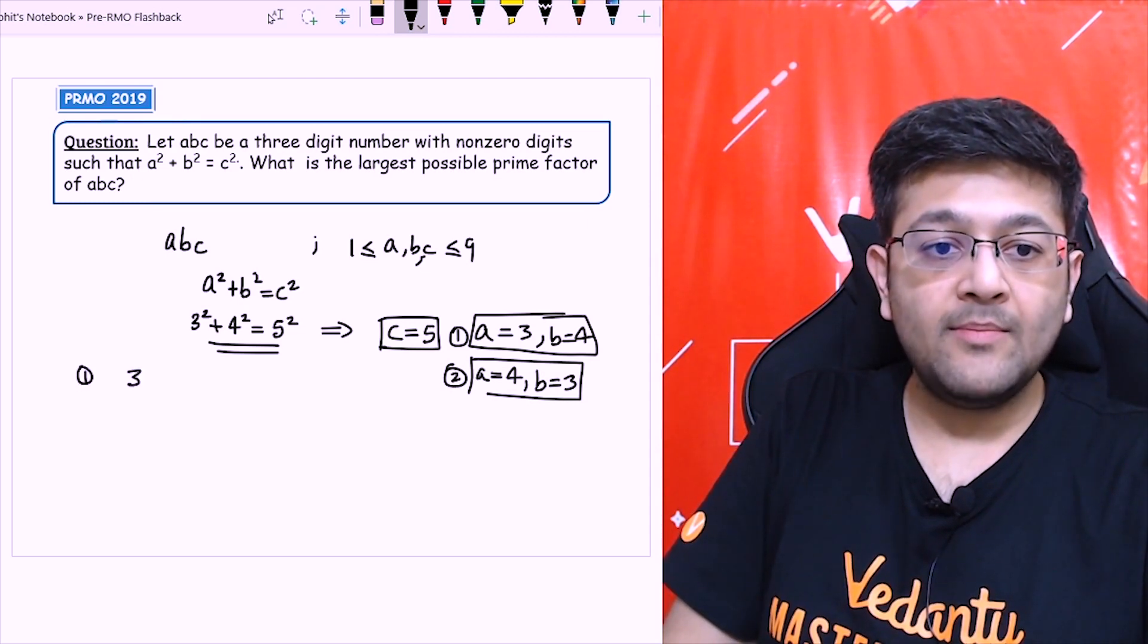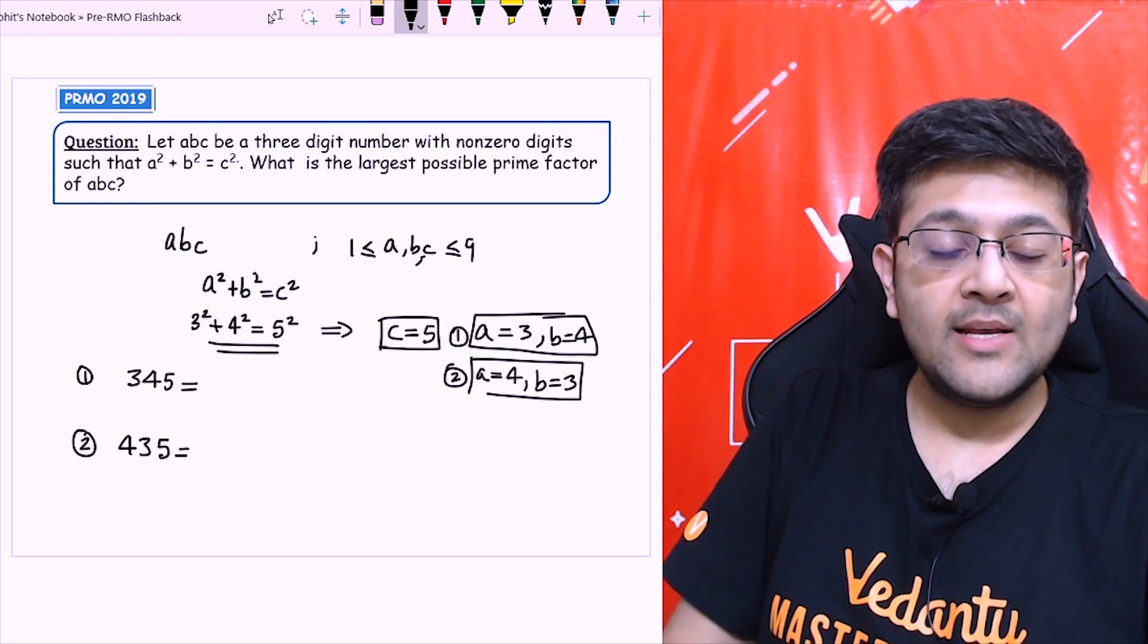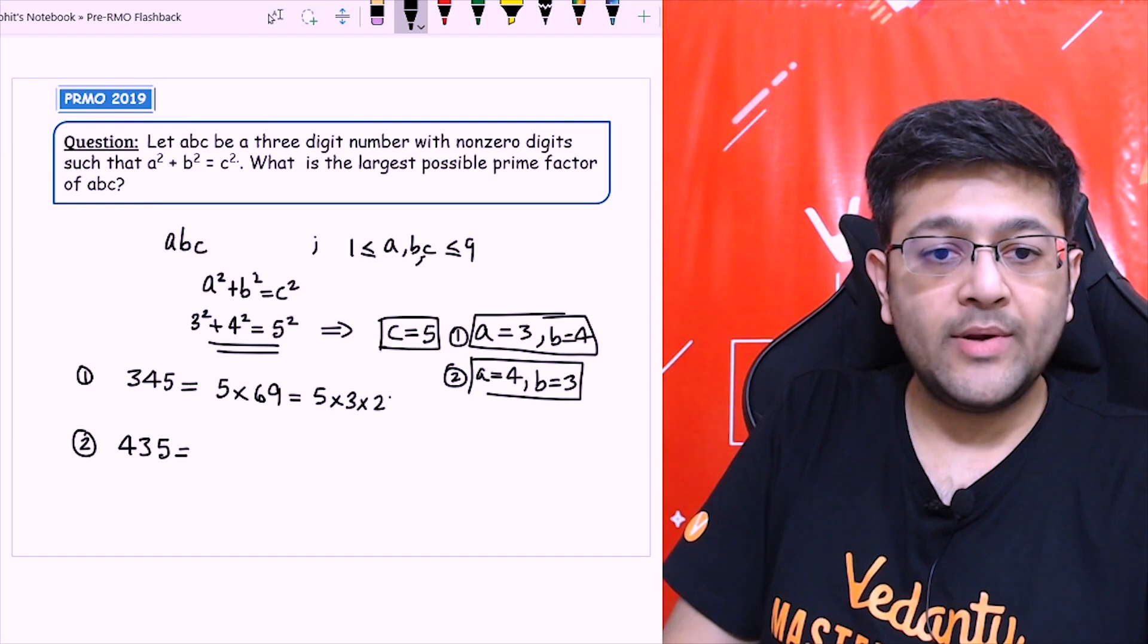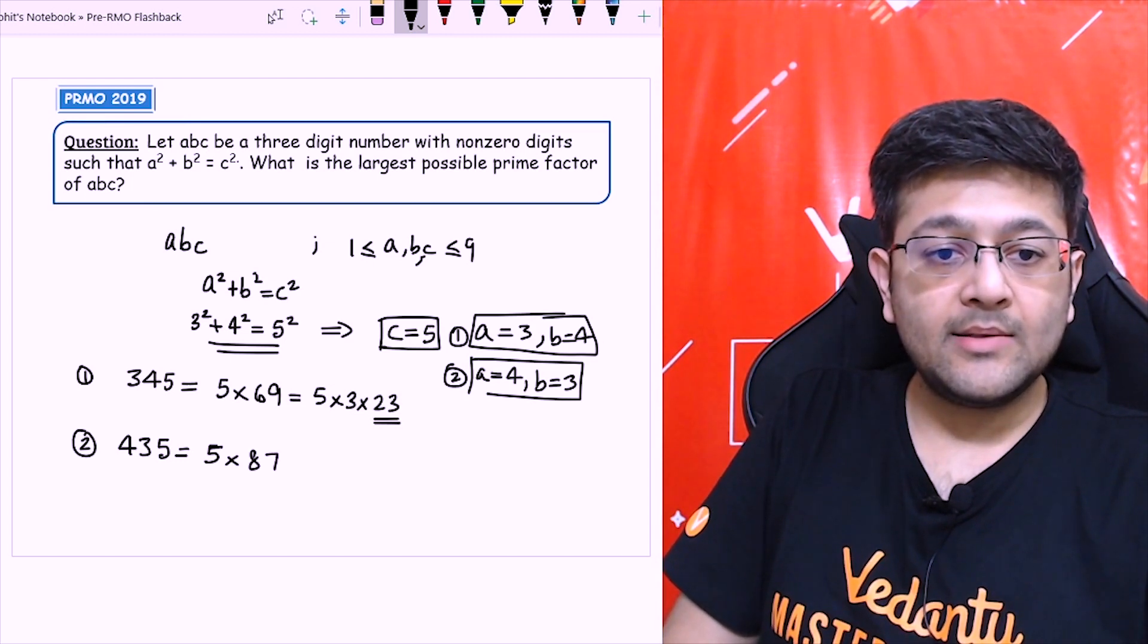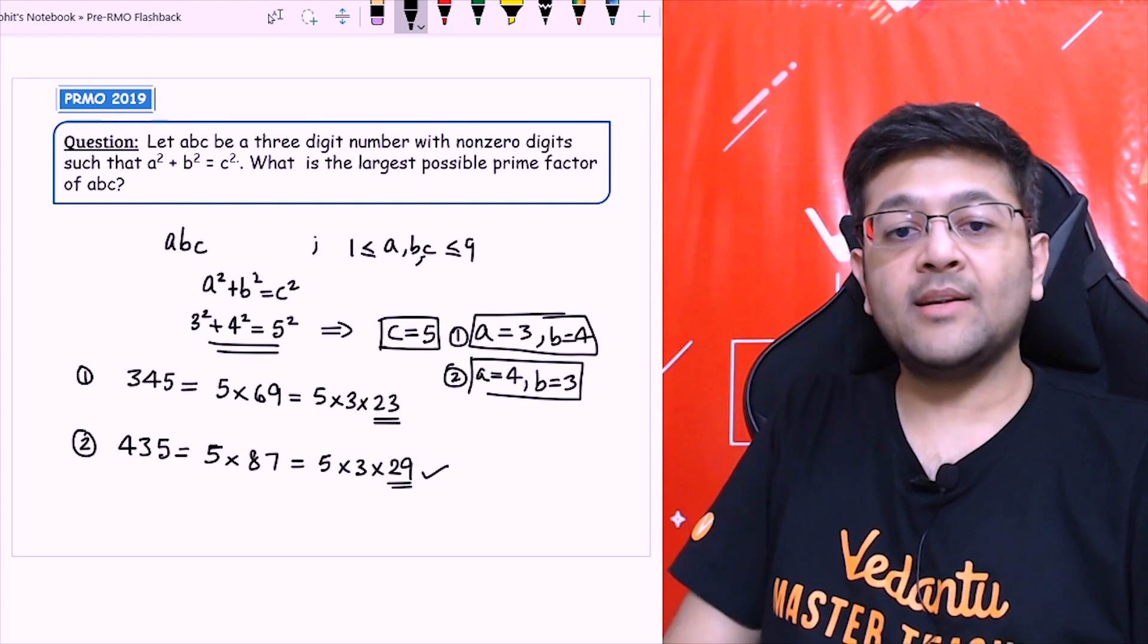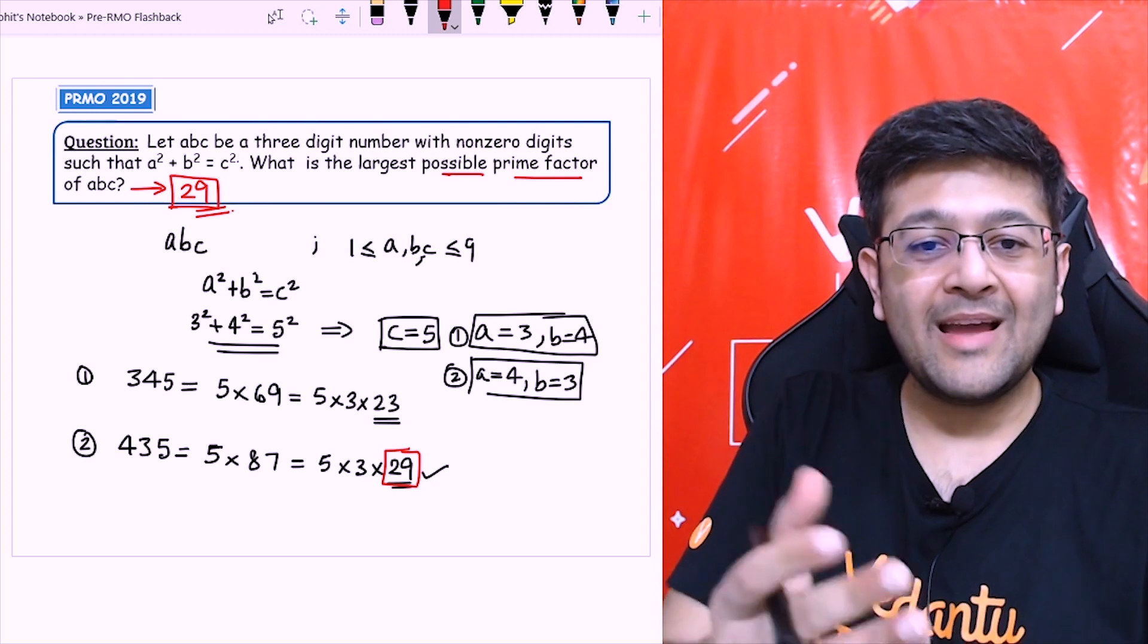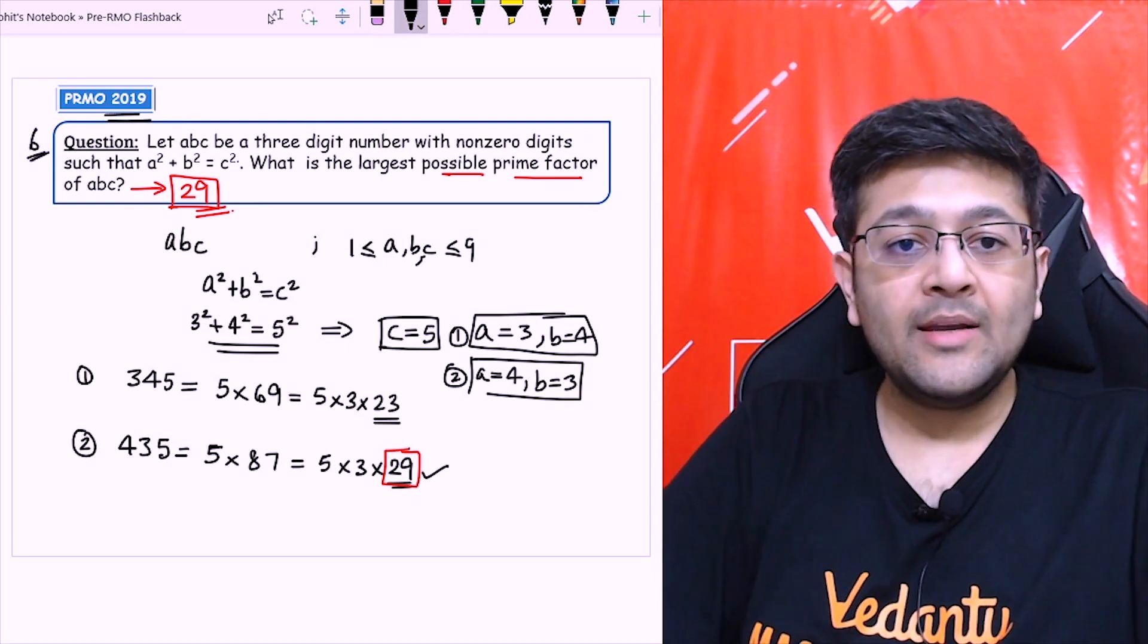Case 1 accordingly, the number will be A is 3, B is 4, C is 5. So now I can prime factorize it. Second case will be A is 4, B is 3 and C is 5. Let's try to factorize these two. 345 factorize: if I divide it by 5, I will get 69, that I can write 5 into 3 into 23. So the largest prime factor in this case will be 23. In 435, let's divide it by 5 again. I will get 87. Now I can factorize 87 again. So 5 into 3 into 29. In this number, the largest prime factor is 29. So the answer should be 29 only. I have to find the largest possible prime factor of ABC. So the answer should be 29. I hope it's clear to everyone. This was the sixth question of Pre-RMO 2019, based on number theory.